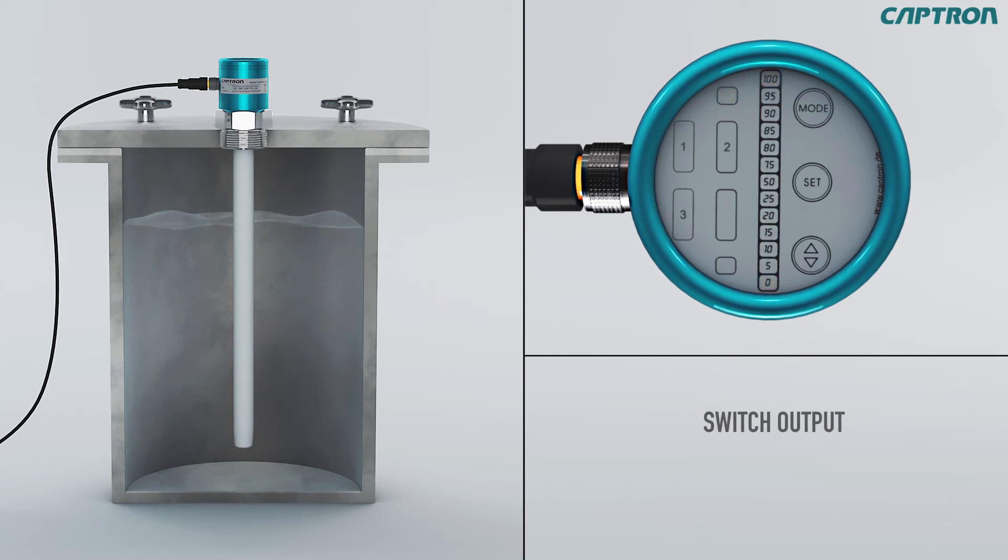Setting the switch output PNP1. The 0 and 100% displays will light up once again as well as the NO or NC display for PNP1. NO stands for normally open and NC for normally closed contact. You can set NO or NC with the up down button. Confirm your adjustment with set.